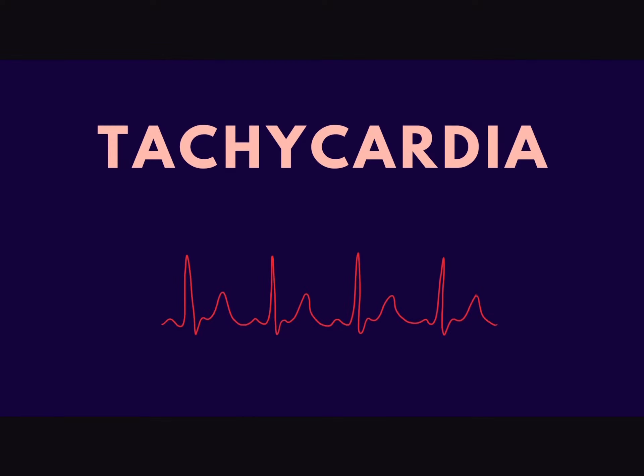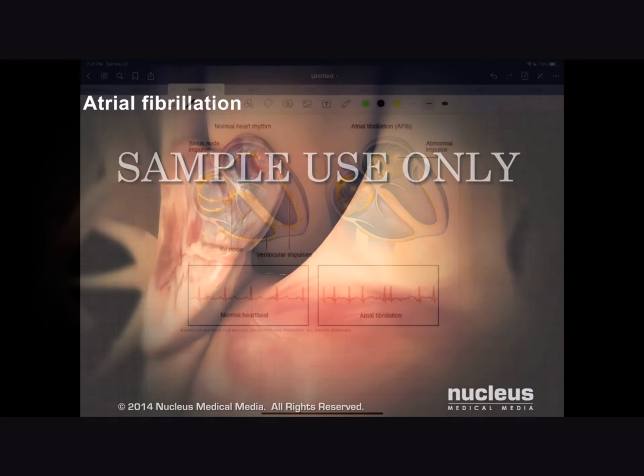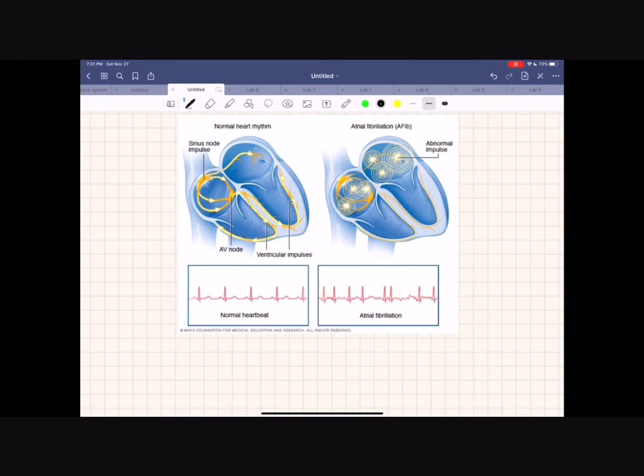One kind of arrhythmia is tachycardia, the abnormal fast beating of the heart. Tachycardia is usually caused by abnormal firing of SA nodes.